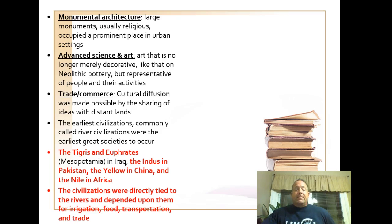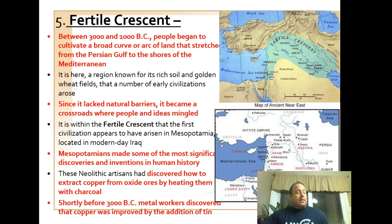Trade and commerce were very important, especially for the people of Mesopotamia, who lacked some important resources — wood, various types of stone, and specifically metals — and had to trade for those. It's important to note that there are four major river civilizations: Mesopotamia on the Tigris and Euphrates, the Nile in Egypt, the Indus River civilization in India, and the Yellow River in China. They all share a number of similarities.